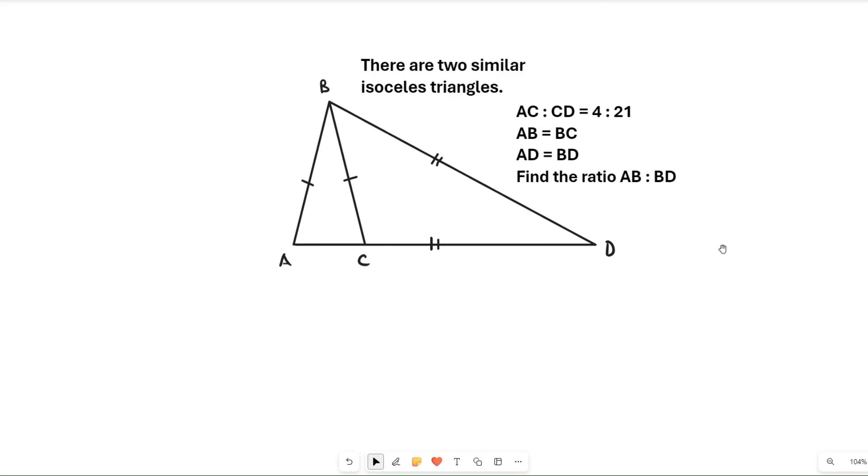Here's the first question we're going to look at. It was a ratio question that a lot of people found hard. There are two similar isosceles triangles ABC and ABD, and AC to CD is a ratio and that is 4 to 21.